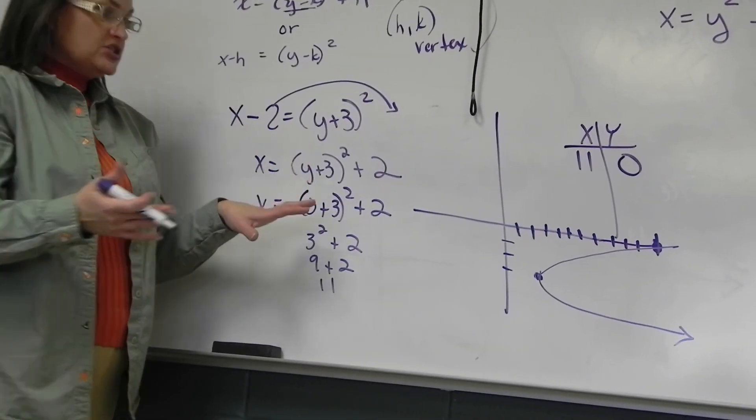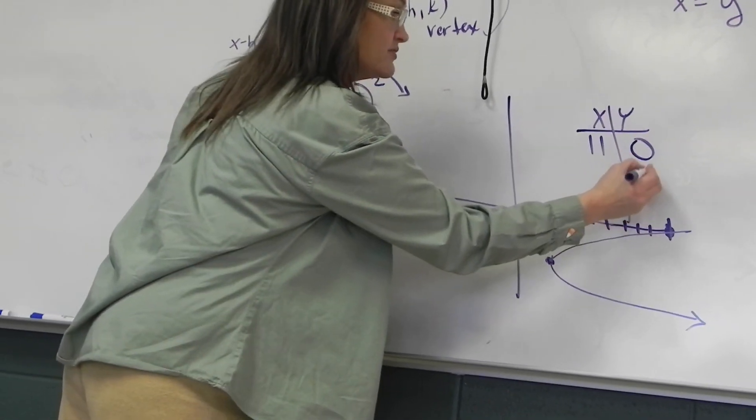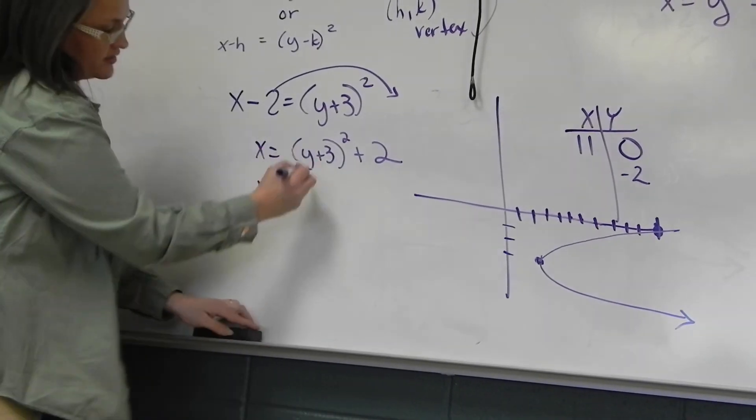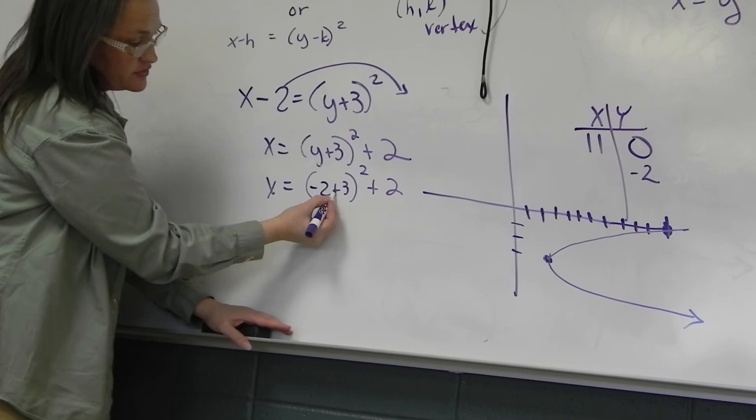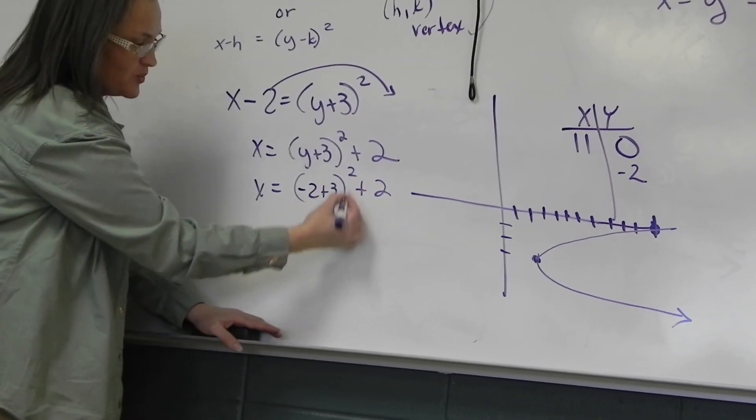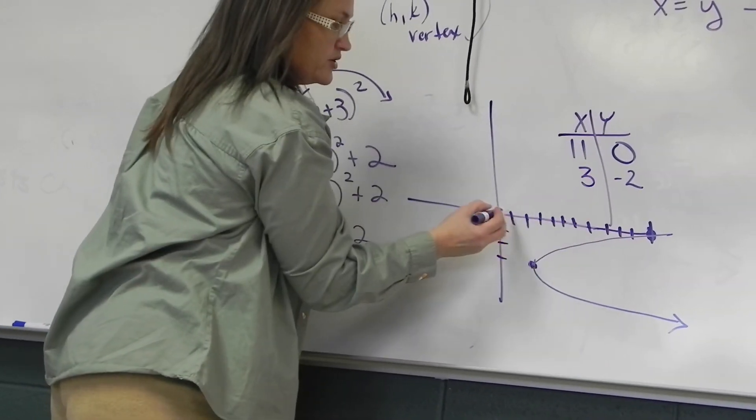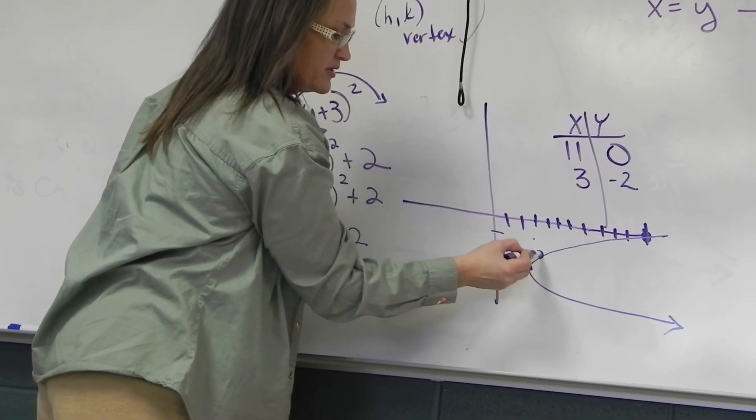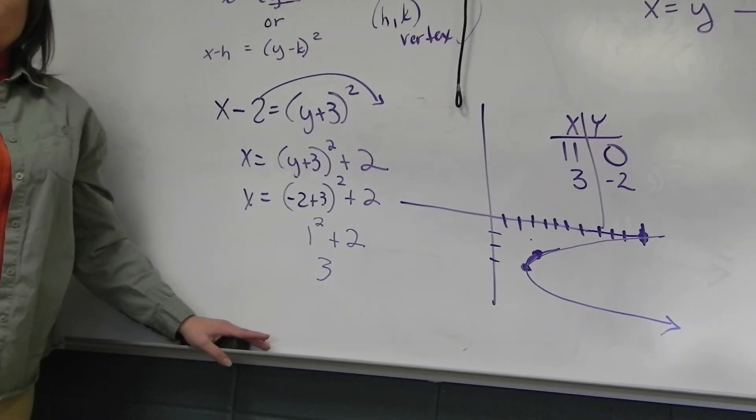Again, maybe I should pick another number maybe closer to the vertex like negative 2. Plug that in for Y. Negative 2 plus 3. Negative 2 plus 3 is 1. This is a much nicer number, right? 1 squared is 1. 1 plus 2 is 3.